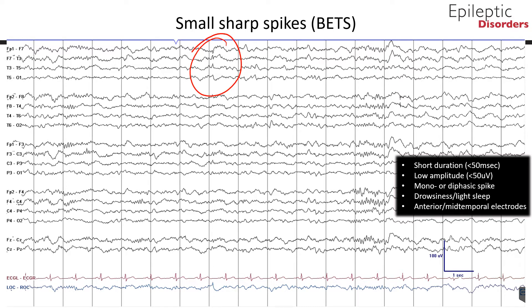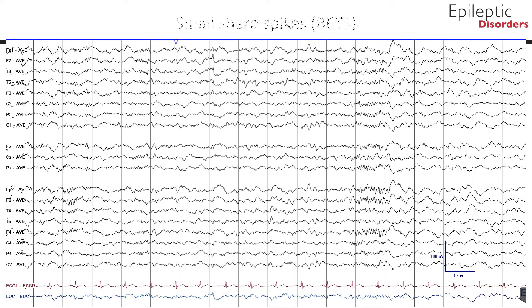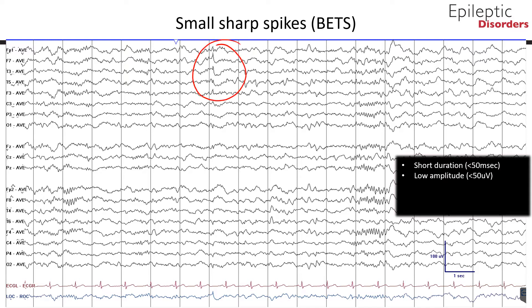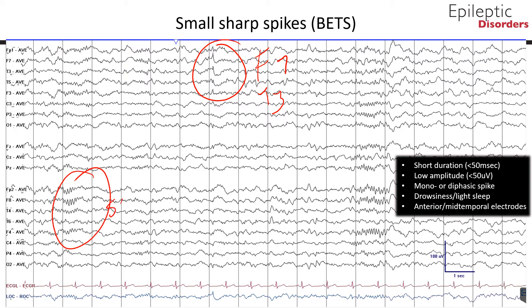They are a very common EEG finding, seen with up to 25% incidence in the normal population. This bipolar montage shows a small sharp spike in the 7th second of the page. The sensitivity of this EEG is at 5 microvolts per millimeter for better visualization of the small sharp spike, which is generally less than 50 microvolts in amplitude. In this epoch, the small sharp spike can be seen in the left frontal F7 and T3 region, outlined in the red circle. This is an average montage of the same patient showing small sharp spikes, best appreciated in the 7th second of the page, with maximal amplitude at F7 and T3, and short duration less than 50 milliseconds. They are maximal in the anterior and mid-temporal electrodes, and are seen in drowsiness and light sleep. This patient is in stage 2 sleep, as noted from the sleep spindles in the second second of the page.